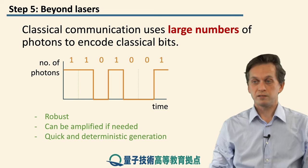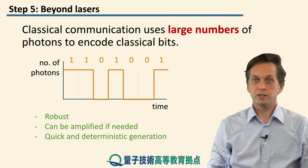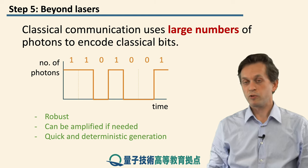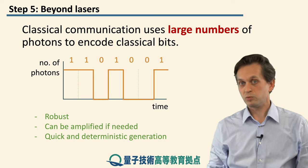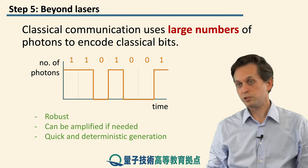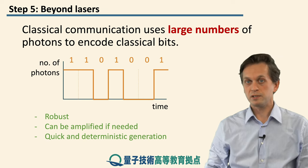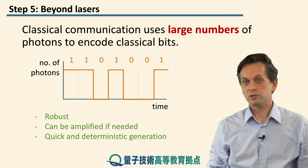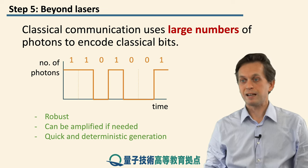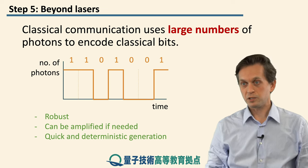Number one, it's robust. Even if you lose some of the photons, it's no real big deal. Of course, eventually you will lose most of your photons and your signal will deteriorate — but then you can just easily amplify and boost the signal back to its original strength. And also it allows for quick and deterministic generation.